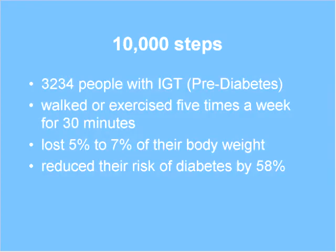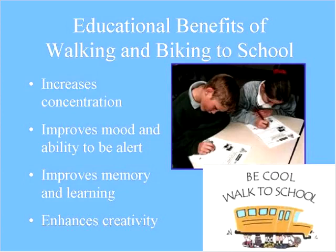Walking is the best treatment we have for obesity reduction and for diabetes or pre-diabetes prevention. A classic NIH study of 3,000 people who joined a walking club, walking five days a week for 30 minutes — at the end of six months, they had lost about 6% of their body weight and reduced their risk of becoming diabetic by 58%. There is no drug or treatment that works as well at preventing onset of diabetes in pre-diabetics as walking.